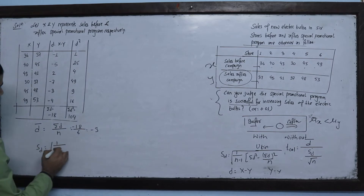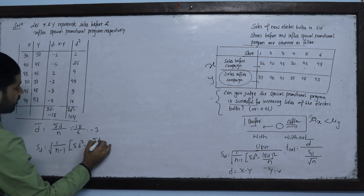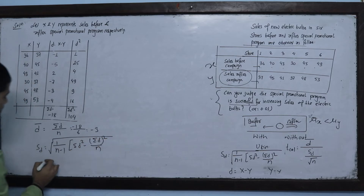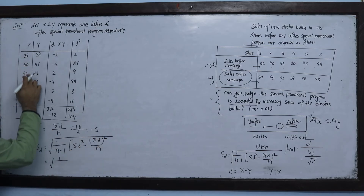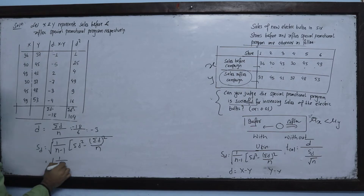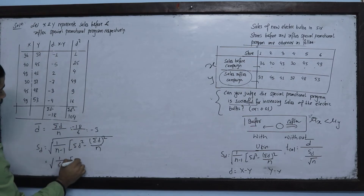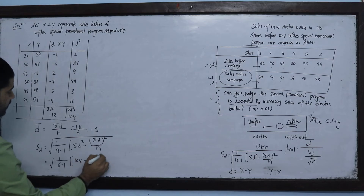SD formula: 1 upon (n minus 1) times the square root of [summation D² minus (summation D)² upon n]. Substituting: 1 upon (6 minus 1), and D² upon n = 104 minus (−18)² upon 6.